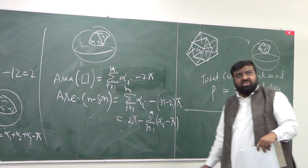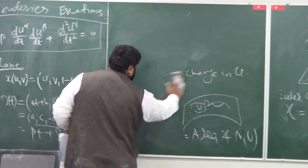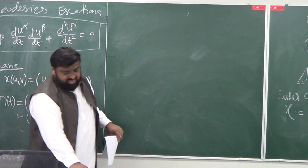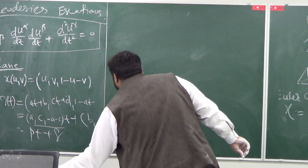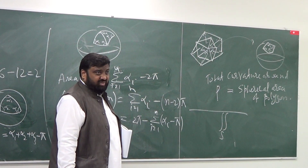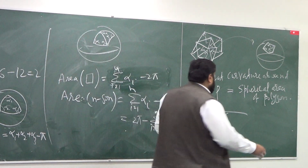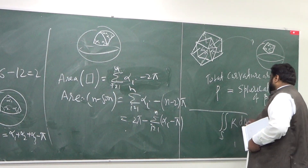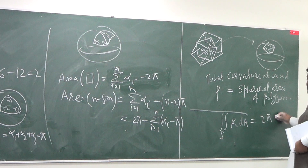The Gauss-Bonnet theorem. Let me write the precise statement of the Gauss-Bonnet theorem. What you have is, in global sense: take any region, any surface — no matter what it is, smooth or polygonal or whatever — and compute its total curvature. This curvature would be equal to 2pi multiplied by the Euler characteristic of that surface.